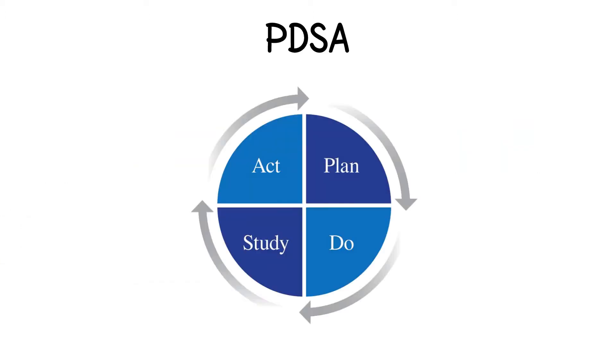In the do stage, you educate and train everyone affected by the intervention or change idea, and then you implement the intervention on a very small scale. You ideally want to start small so that you can further tweak and refine the intervention based on what you've learned and minimize unintended consequences.